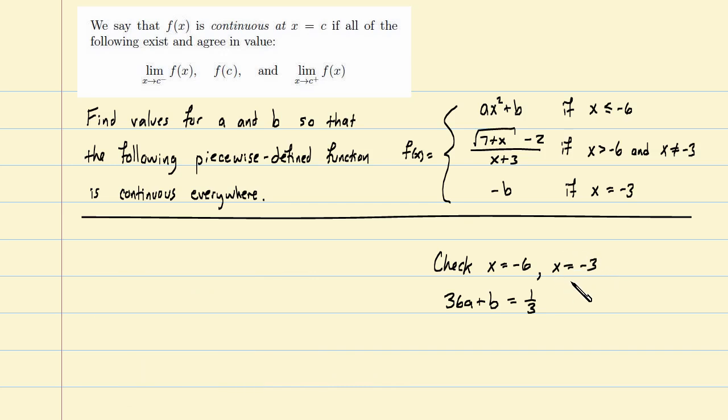Of course, this equation came from looking at what happens when x equals negative 6. Maybe we can get another equation from looking at what happens when x equals negative 3. Now, here again, if we're going to be continuous at x equals negative 3, we're continuous everywhere. Then these three things, when c is negative 3, have to all exist and agree in value.